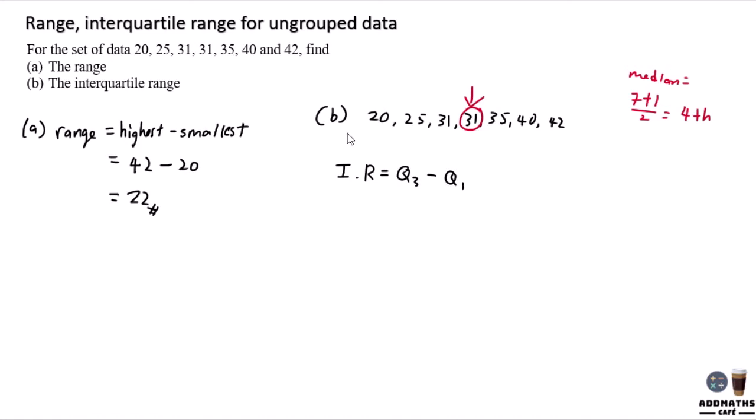Q3 means quartile three, Q1 means quartile one. To find Q3, Q3 will be the median after the median. So you look at this part, the median over here is 40. And Q1 will be the median before this median.